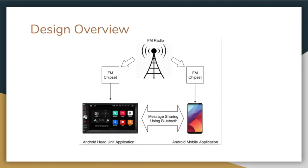As the server processes this, the client requests the server for any available stations that have better content. If the response is indeed a better station, it makes a switch. FMHOP does not require direct user interaction, but users are still capable of overriding FMHOP's decisions. We keep track of this so that we can later use it to understand user preferences based on how much of a certain music track they listen to.